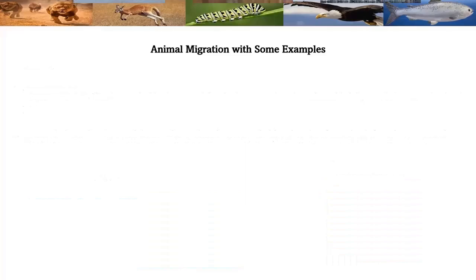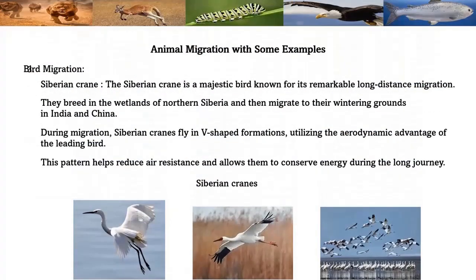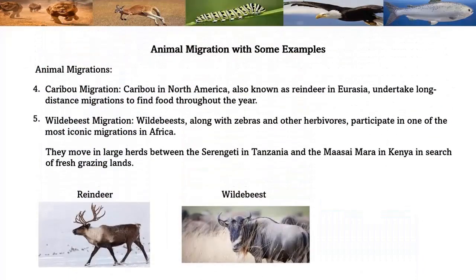Siberian cranes are majestic birds known for remarkable long-distance migration. They breed in the wetlands of northern Siberia and migrate to their wintering grounds in India and China. Caribou in North America — also known as reindeer in Eurasia — undertake long-distance migrations to find food throughout the year.